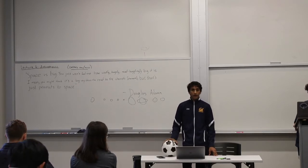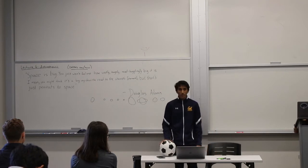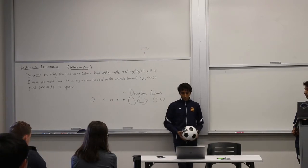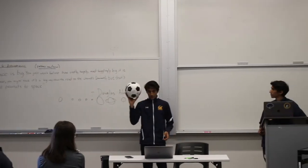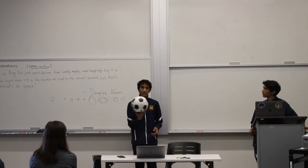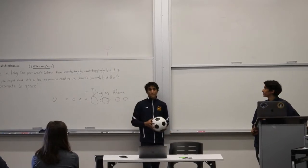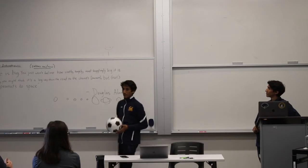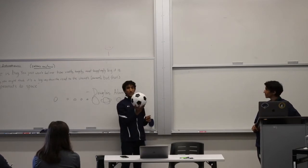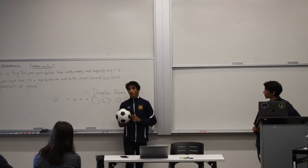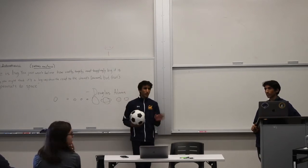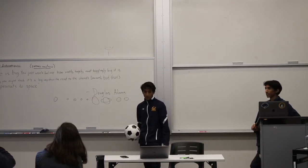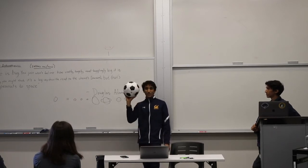The Earth is about 13,000 kilometers in diameter. Let's scale the Earth down to the size of a soccer ball. If the Earth were the size of a soccer ball, the Moon would be about a third of that size. And at this scale, the Moon would be about as distant as that wall — roughly 24 meters away. So the Moon is pretty far away compared to the Earth.